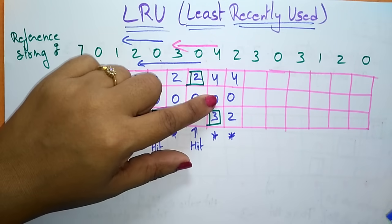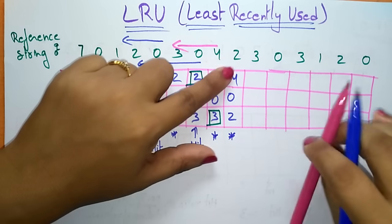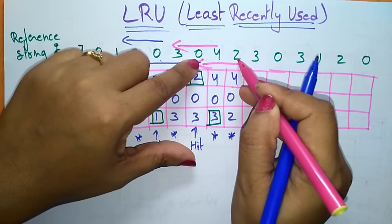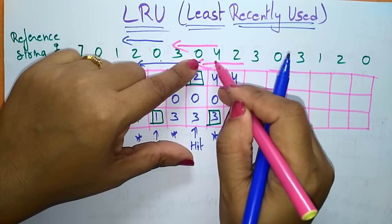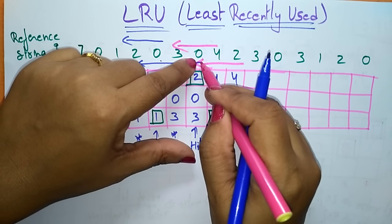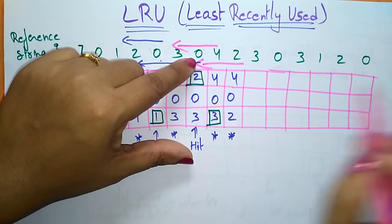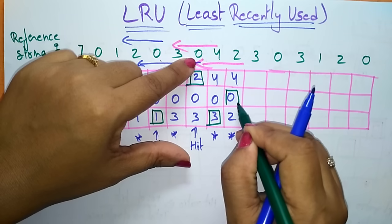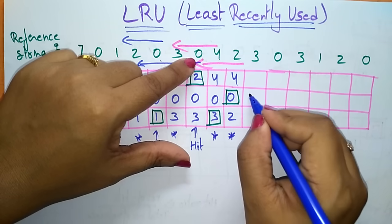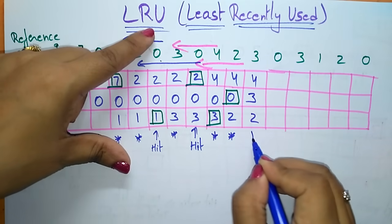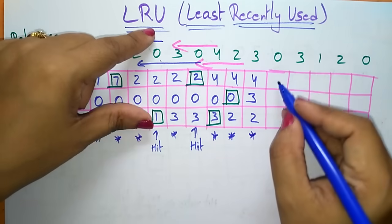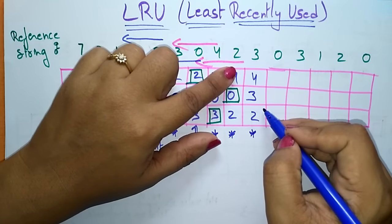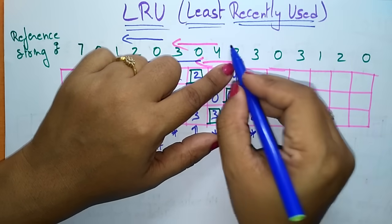Again check which is the least recently used among 2, 0, 4: 2 is most recently used, then 4, and 0 is the least recently used. So I replace 0 with 3, giving frames: 3, 4, 2. This is also a page fault. Now I have to place 0 — check for least recently used.